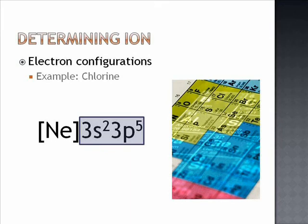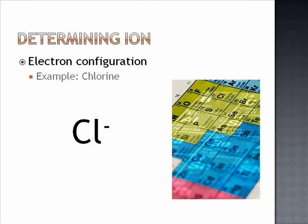To obtain the noble gas electron configuration, chlorine gains one electron in the 3p orbital. This gives chlorine eight valence electrons and therefore a stable electron configuration. The resulting anion has a charge of minus one, which is symbolized by a minus sign in the upper right hand corner of chlorine's atomic symbol.